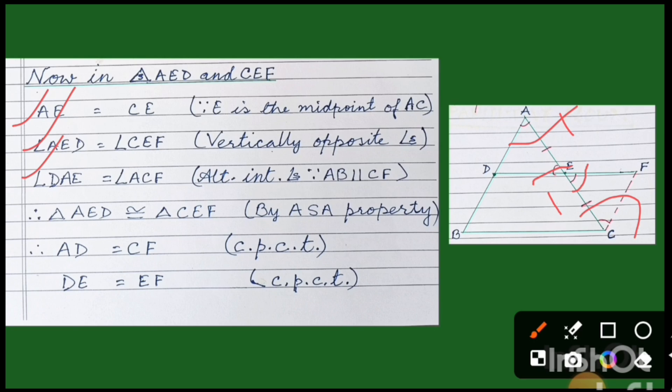Triangles DAE and CEF are congruent by the ASA congruency property. Why ASA? Because here we have proved two angles and one side. As we know that these two angles are congruent, and according to congruency, AD is equal to CF by CPCT — Corresponding Parts of Congruent Triangles. These are corresponding parts: one side here and one side here.